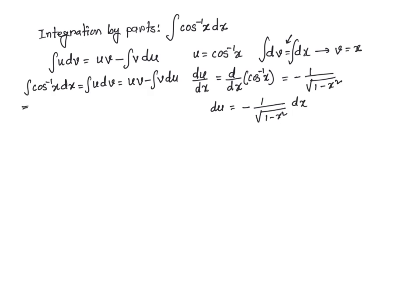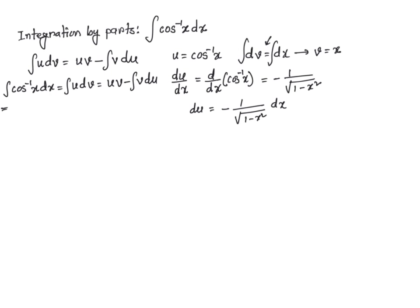My u is cosine inverse of x, so it's going to be cosine inverse of x, and v is just x. So it's going to be x times cosine inverse of x, minus the integral of v du. Here, v is x and du is negative dx over square root of 1 minus x squared.